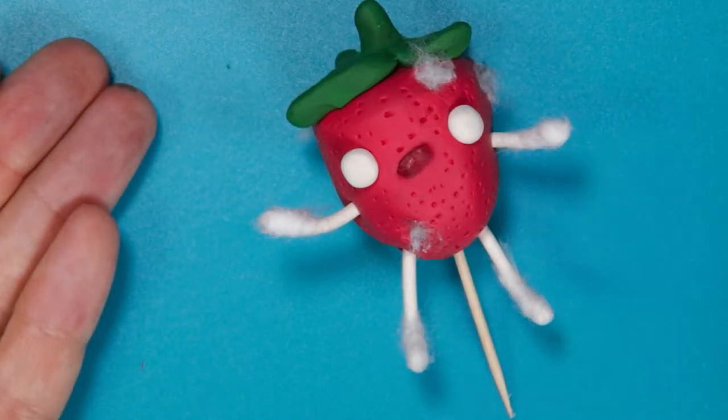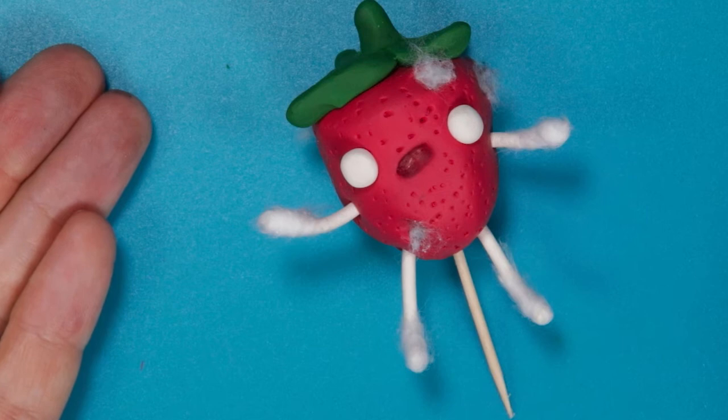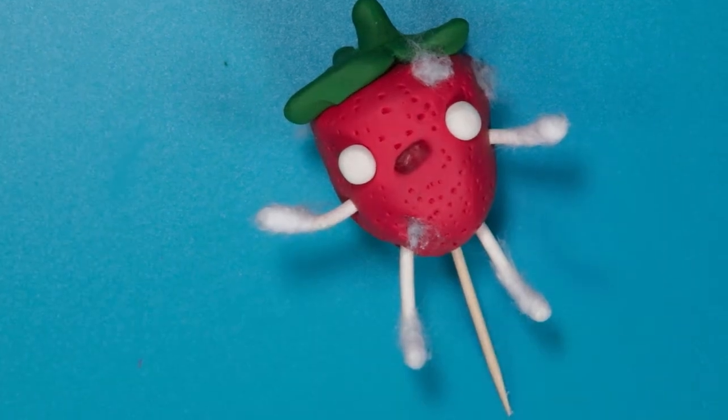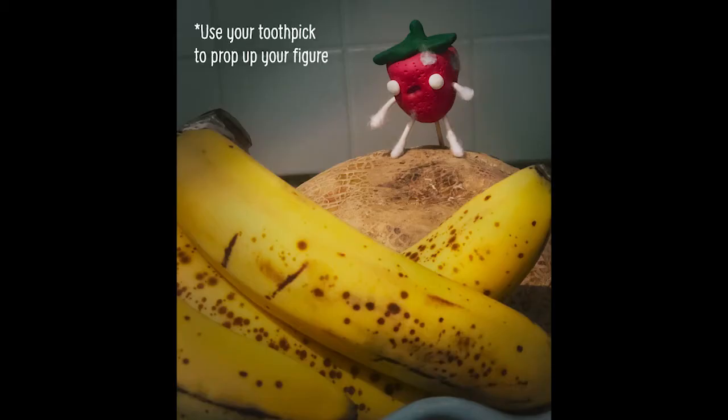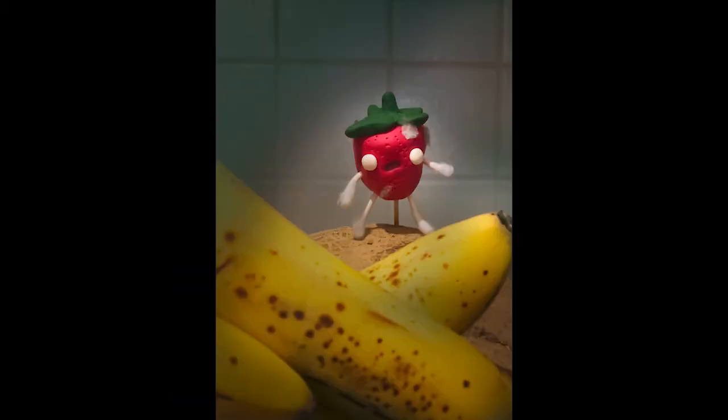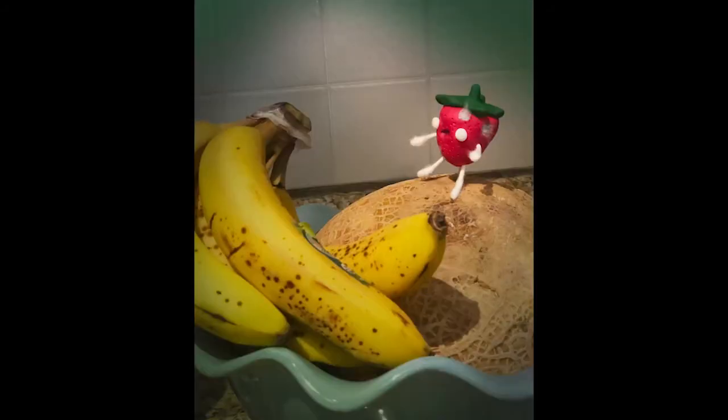Now your zombie strawberry is ready to attack for your diorama. All you have to do is go inside your kitchen and find some fruit that need to be attacked by your new zombie strawberry. So go ahead and just use your iPhone or whatever camera you have and take your diorama picture.